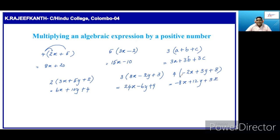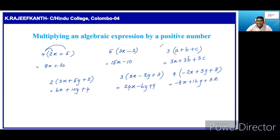So in this way, we can remove the brackets of this expression. So, if you want to multiply an expression by a number, we have to multiply by that number each term of the expression. In this video, we are seeing how to multiply an expression by a positive number. In the next video, we will see how to multiply an expression by a negative number.